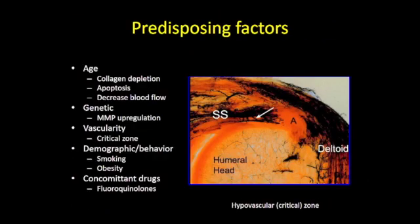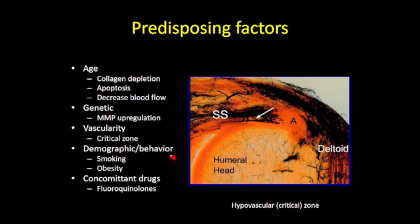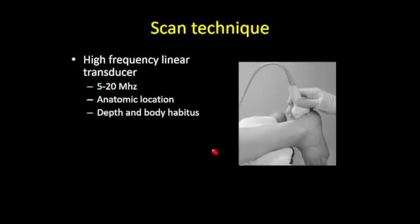There are a number of predisposing factors associated with tendon degeneration. As we get older, we lose collagen, experience cellular apoptosis, and have diminished blood flow. Genetically, there is an upregulation of matrix metalloproteinases, a form of collagenase that breaks down collagen in tendons. Many tendons also have an inherent hypovascular zone that increases in size as blood flow decreases. Smoking, obesity, and concomitant drug use — including fluoroquinolones — are additional predisposing factors for tendinosis and tendon rupture.